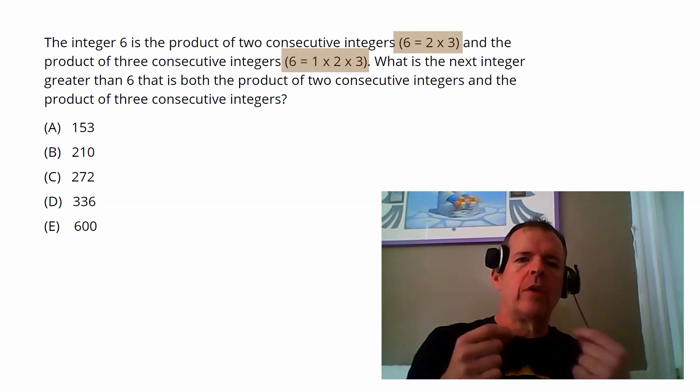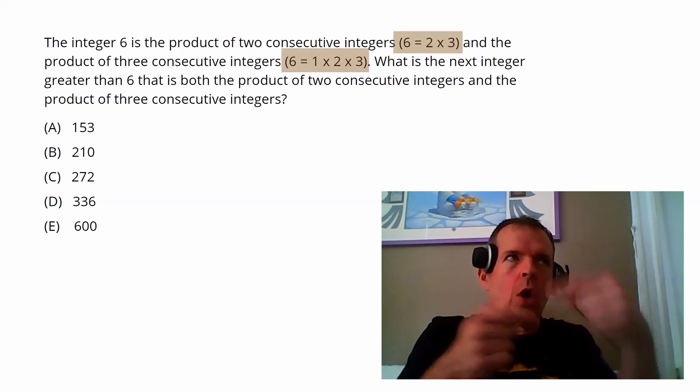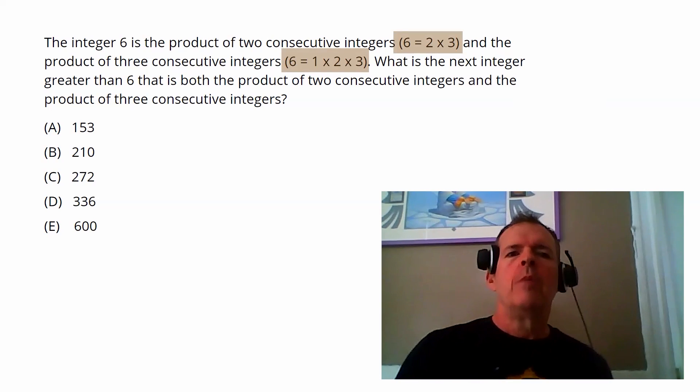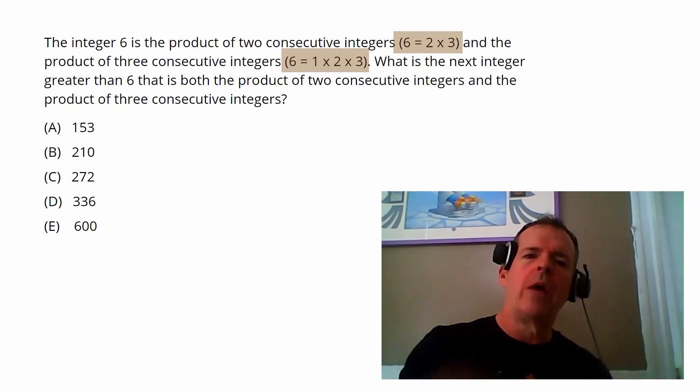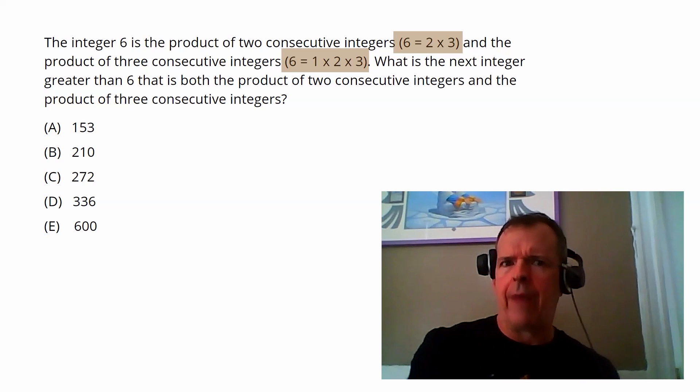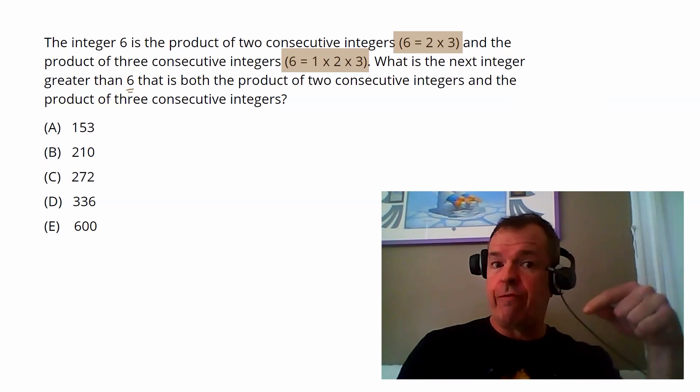So this is something where there could be a temptation to kind of start to work our way up and think, well, there's six, so what would be another good candidate? What's the next one up? But this is where I think it is reinforced how important it is to make sure that you look at the answer choices and use them to your advantage. That's one of the big things about the GMAT. We have answer choices we can work with. And because they want the next integer greater, our hand is basically forced in that we want to work from A on down to E.